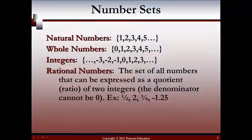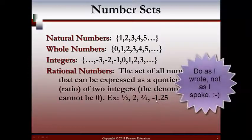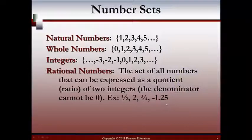Some examples are 1 half, the whole number 2, because if you think about it, you can write 2 over 1, which is a fraction, 3 over 4, and negative 1.25. Because if you think about changing that into fraction form, that's basically negative 1 and 3 fourths. So you can still write that as a fraction.